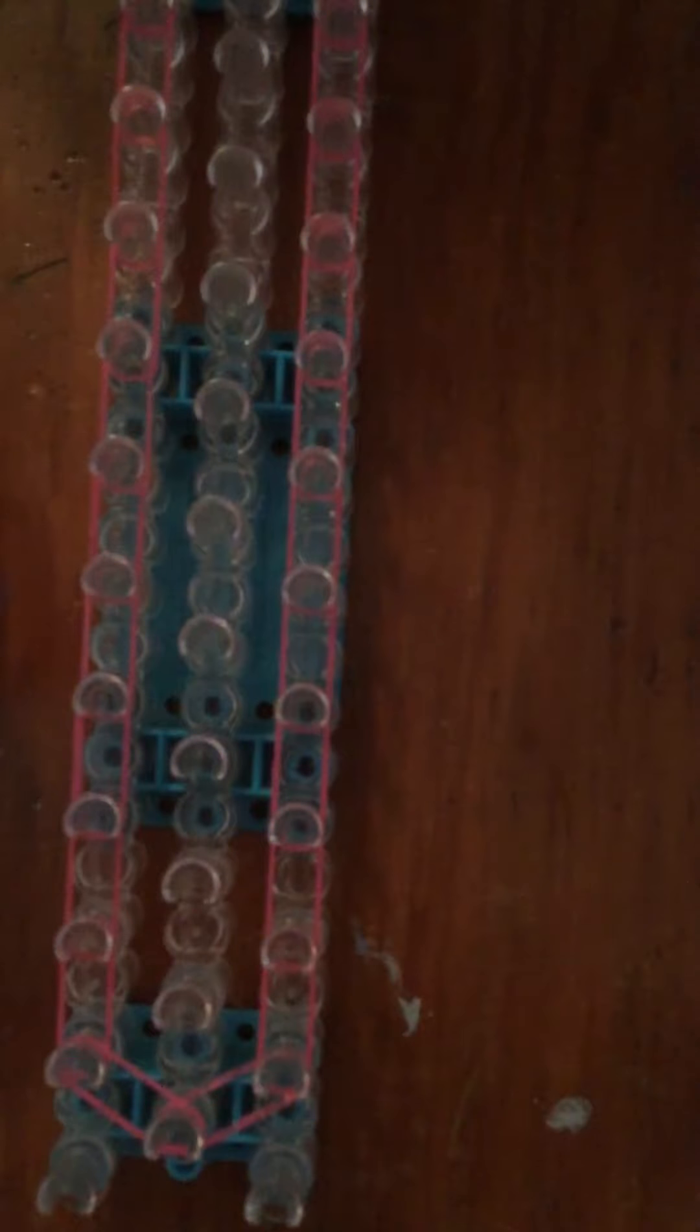To make the eights, you will use single rubber bands again. Put it on the second pin, hook it on, and make a figure eight. Just keep doing that all the way down your loom.